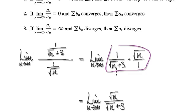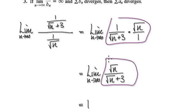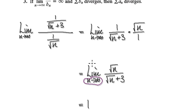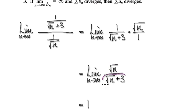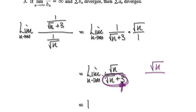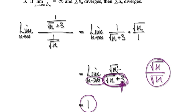So now we tidy this up, and it gives you a simplified expression. As n tends to infinity, look at the denominator — the added term becomes insignificant. So the numerator is square root of n, and the denominator just acts like square root of n as well. So the limit of a_n over b_n as n tends to infinity is 1.